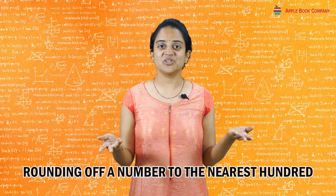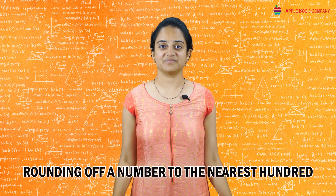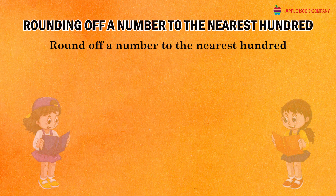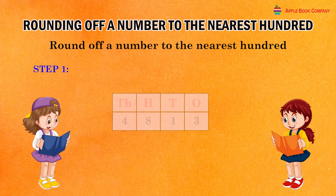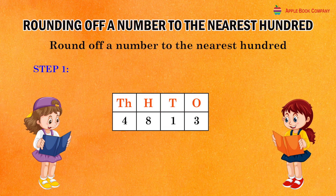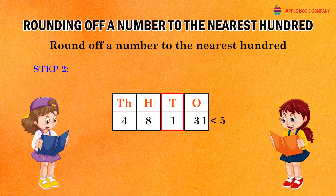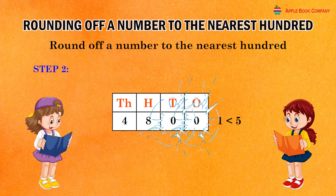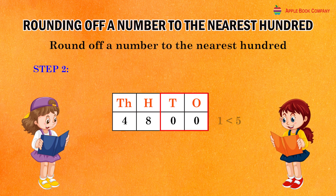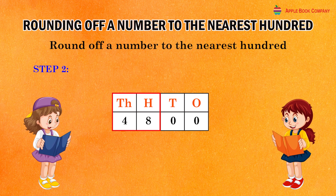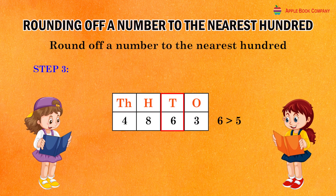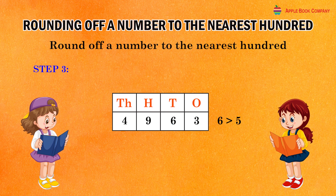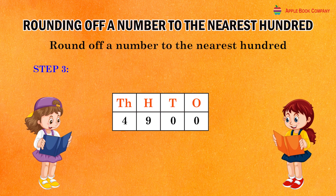Rounding of a number to the nearest hundred. To round off a number to the nearest hundred, we follow the following steps. See the ten's digit of the given number. If the ten's digit is less than five, replace each one of the tens and one's digits by zero and keep the other digits as they are. If the ten's digit is five or more, increase the hundred's digit by one and replace each digit on its right by zero.